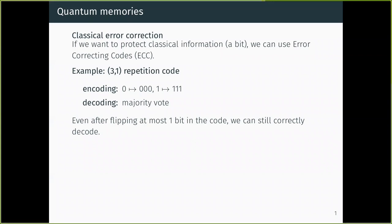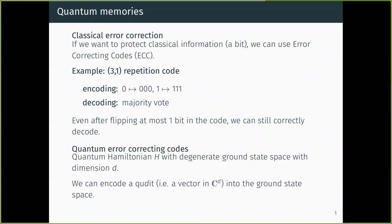There is a whole theory of error correcting codes for classical systems, and the idea for quantum codes is very similar. We take our vector in a two-dimensional space and encode it into a subspace of a larger Hilbert space. In particular, what we really want is the subspace defined as the ground state space — the lowest energy subspace of some quantum Hamiltonian. If we have a Hamiltonian with a degenerate ground state of dimension d, we can encode any vector of that dimension into this subspace.